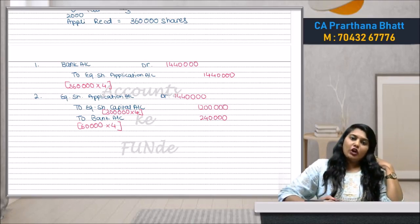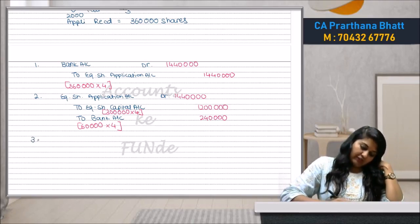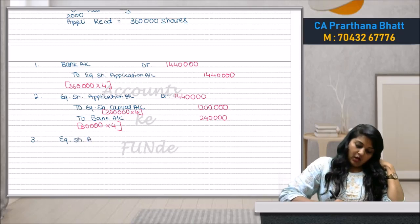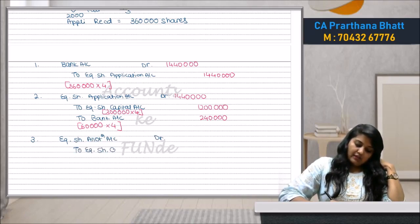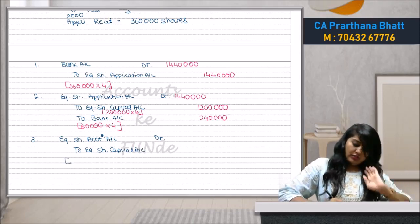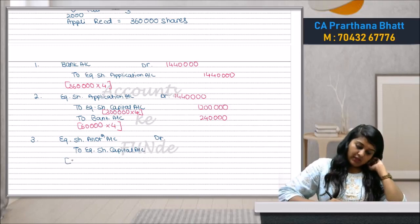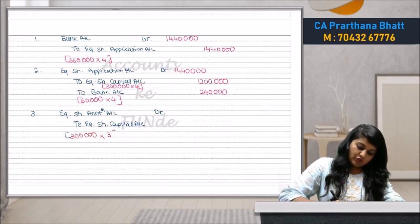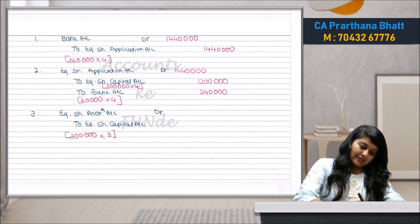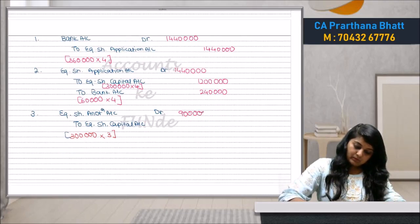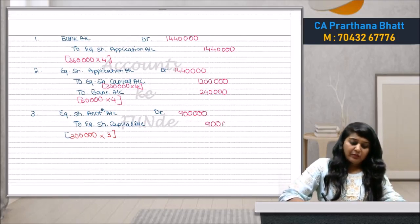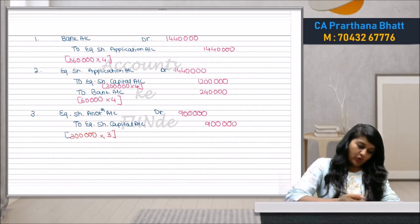Next entry is for allotment due: Equity Share Allotment Account debit to Equity Share Capital Account. How much? 3,00,000 shares × ₹3 = ₹9,00,000. There is no problem in allotment — we received the full allotment amount.